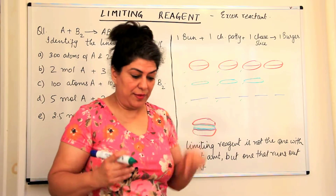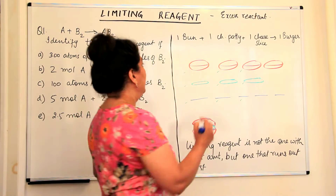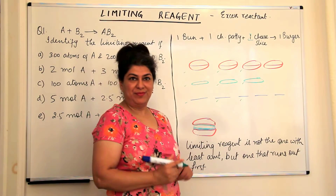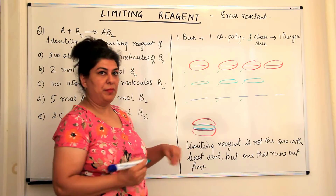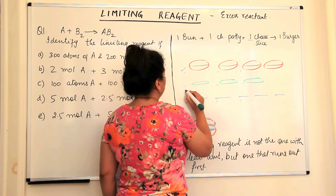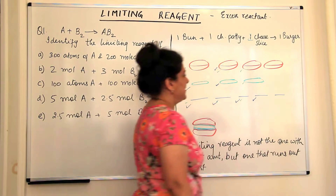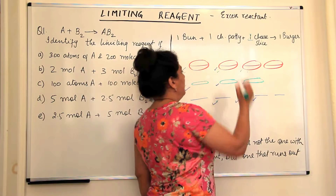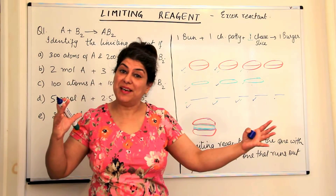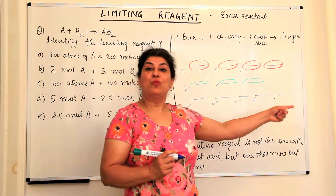Now let us take another assumption. Let us assume that the kids told me they don't want one cheese slice — they want two cheese slices in their burgers. So let's change the recipe: for every burger to be formed, I now need one bun, one chicken patty, and two cheese slices. Using two cheese slices per burger: first burger — one bun, one chicken patty, two cheese slices. Second burger — one bun, one chicken patty, two cheese slices. But when I come to the third burger, I have one bun, one chicken patty, but only one cheese slice left. So although I had five cheese slices, which were the maximum in number, it was the cheese slices which ran out first, and therefore in the second case, it was the cheese slices which were the limiting reagent.